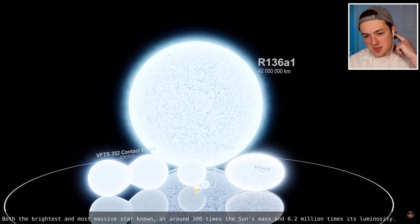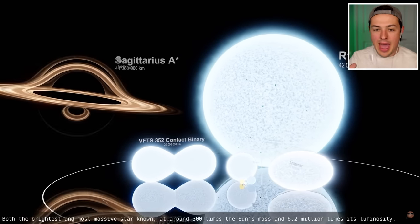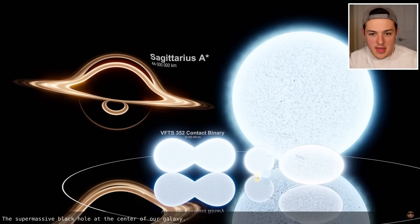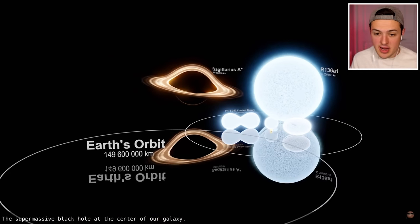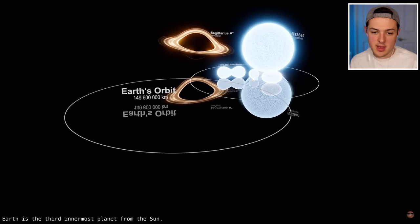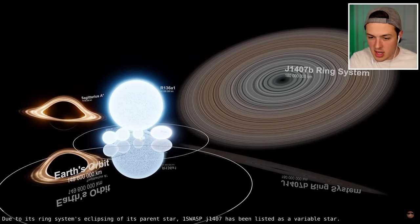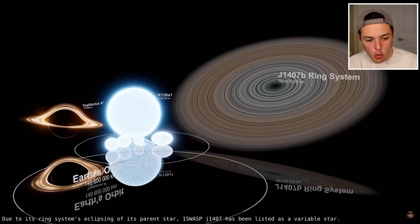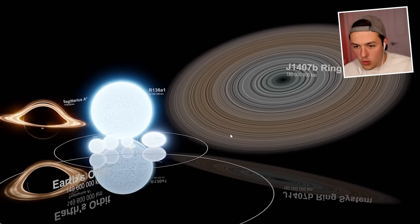And at this point you can't even fathom how big these things are. That is Sagittarius A which is the black hole at the center of our galaxy. The graphics around that look so cool. That is Earth's orbit of the sun. What is that? A ring system? What? I don't even understand what a ring system is. But it looks beautiful.